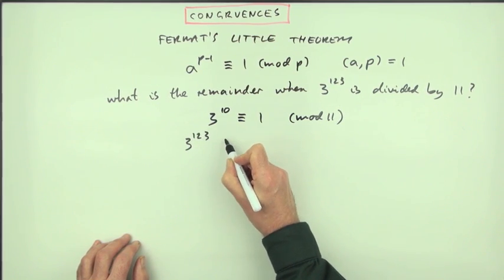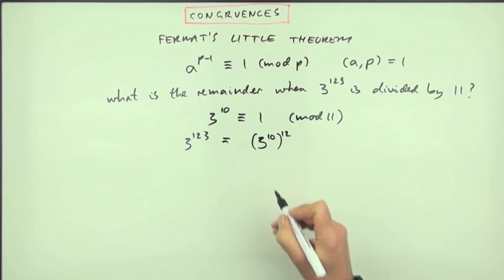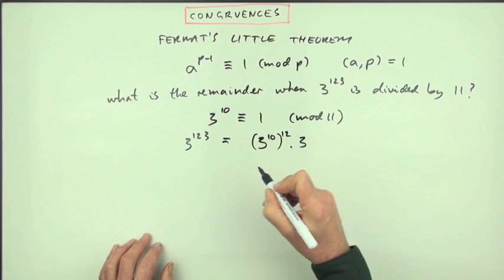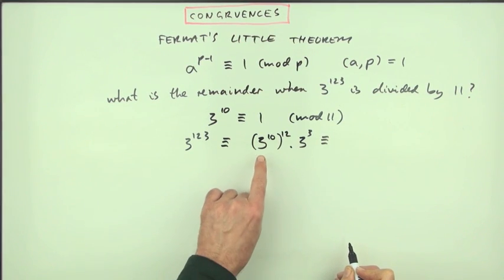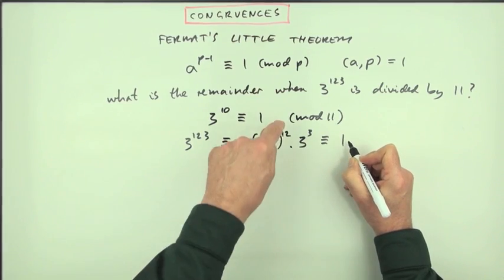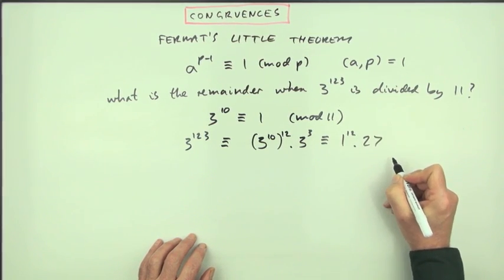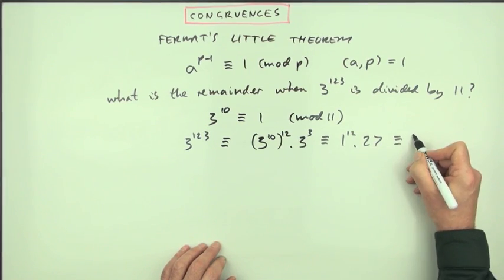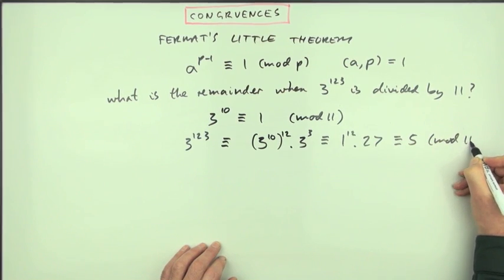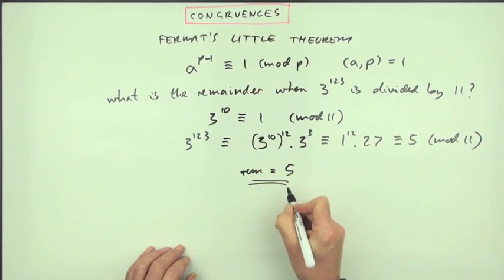You can use those multiplication rules for congruences to construct this. So 3 to the 123 is equal to 3 to the 10 raised to the power of 12, that's power of 120, multiplied by 3 to the power of 3. So that should be congruent to, well, 3 to the 10 is congruent to 1, so that's congruent to 1 to the 12 times 27. Now, 1 to the 12 is just 1, and 27, 11 to 27 is 2 remainder 5, so that's 5 mod 11. The answer to the question is, the remainder equals 5.